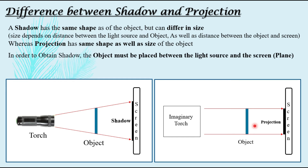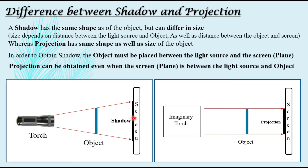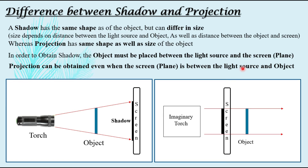The second difference: in order to obtain a shadow, the object must be placed between the light source and the screen. Whereas for a projection, it can be obtained even if the screen is placed between the light source and the object. If you remove the screen from here and place it in front, you will still have the projections obtained on the screen. This is an imaginary concept because we do not have any torch whose light rays run parallel to each other — the torch example was given only to help you understand better.